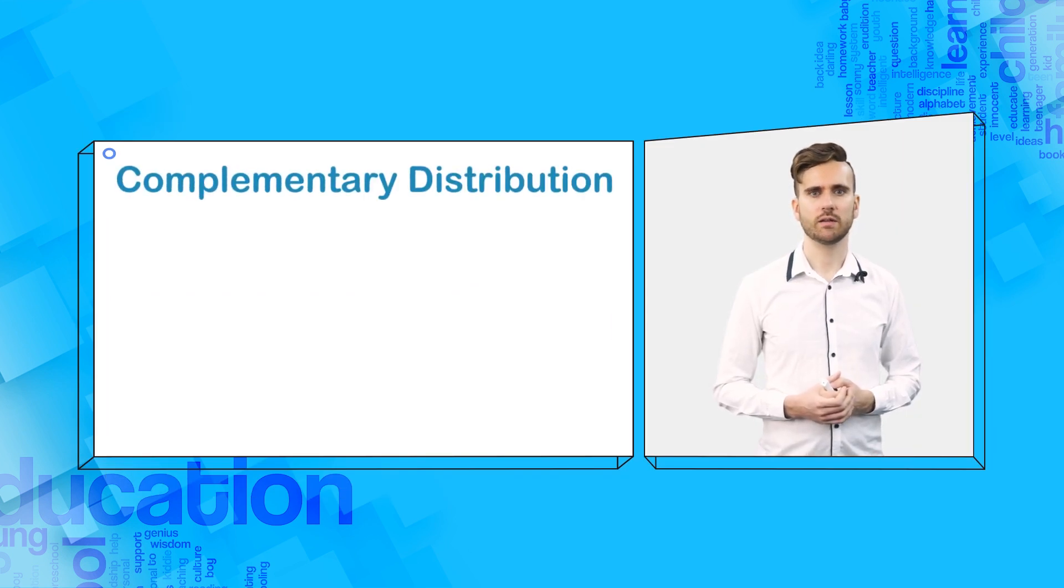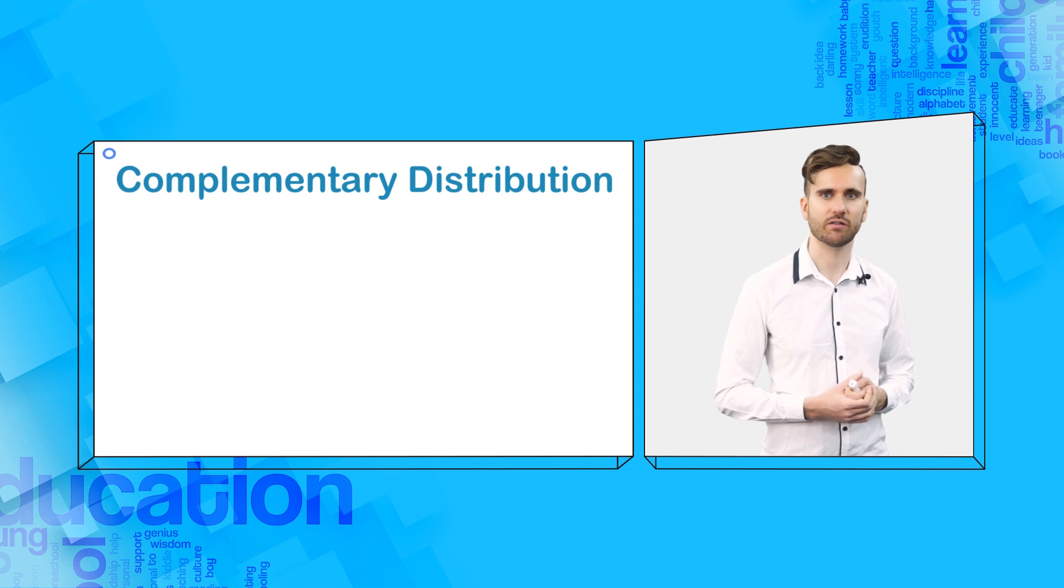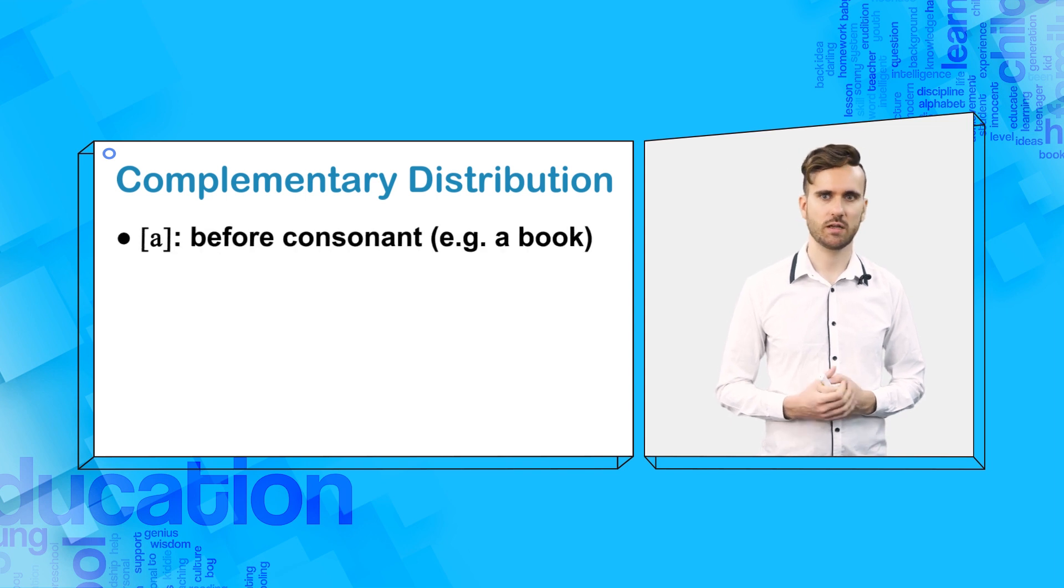It is clear that these two forms cannot be freely swapped around. In fact, which form you use depends on the phonetic environment of the sound at the beginning of the word after the indefinite article. What is the phonetic environment in this case? Firstly, if the word begins with a consonant, the indefinite article is a. For example, a book.